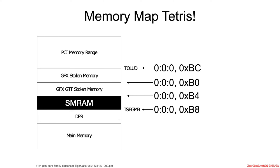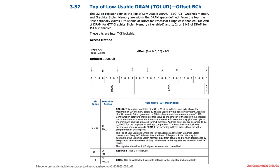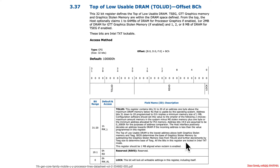Let's look at the definition of those registers. Toled — top of lower usable DRAM — is at offset BC. This register uses bits 20 to 31 for the address representing the top of lower usable DRAM, followed by some reserved space and a lock bit.